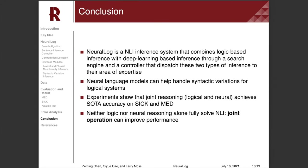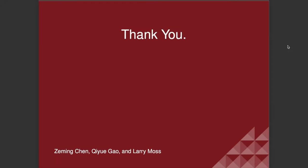In conclusion, Neurolog is a natural language inference system that combines logic-based inference with deep learning-based inference through a search engine and a controller that dispatches two types of inferences to their area of expertise. Neural language models can help handle syntactic variations for logical systems, and experiments show that joint reasoning achieves state-of-the-art accuracy on SICK and MAD. Overall, neither logic nor neural reasoning alone fully solves NLI, so joint operation can improve performance.